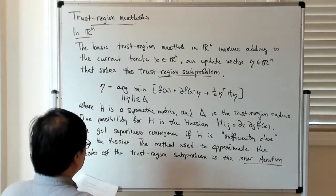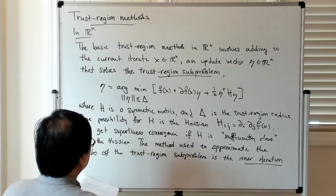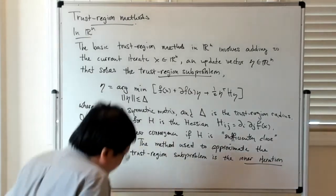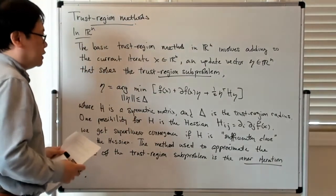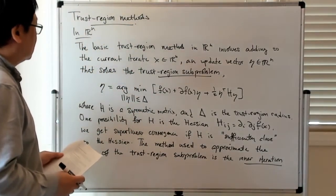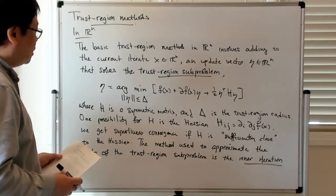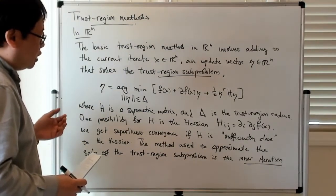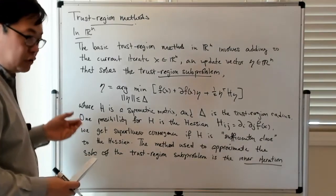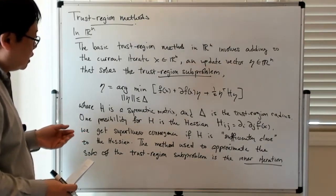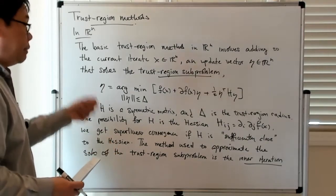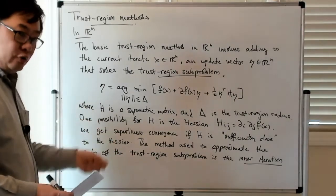After the inner iteration, then what we're going to do is we're going to essentially test the quality of the quadratic model by essentially comparing what you expect the function value to be at the new point based on the quadratic model versus what the actual function value is.